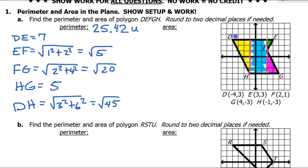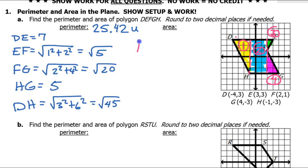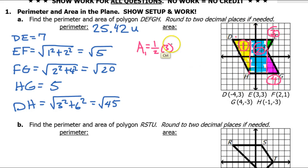I'm going to assign zone one, zone two, zone three, and zone four. Let's find area one — this is a triangle, so that's one half base times height. The base is 3 and the height is 6, so one half times 3 times 6. Half of 6 is 3, and 3 times 3 is 9. So area one is 9.